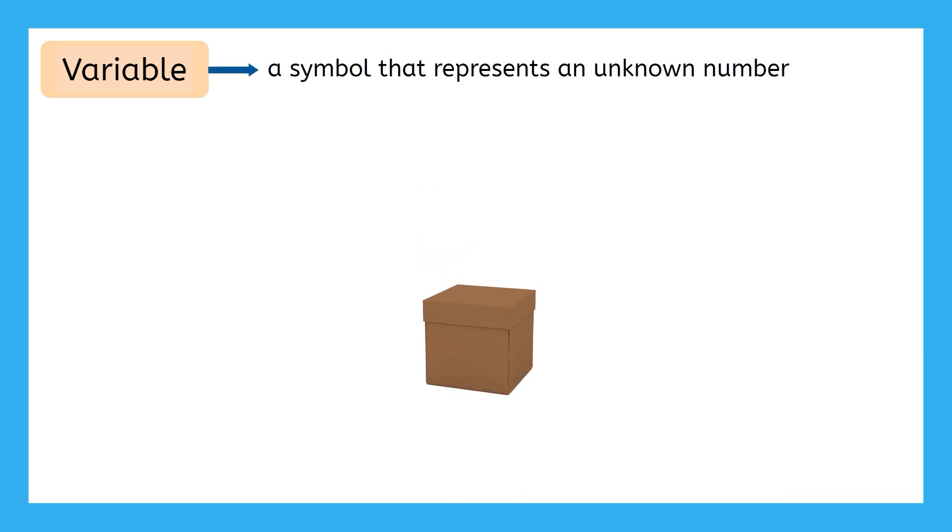We use letters a lot in algebra to represent unknown numbers. This type of letter in math is called a variable. To create a variable, we can use any letter we want because it's just a symbol that represents an unknown number. Think of it like a mystery box that could contain any number. We just don't know what it is yet. So let's pick a variable to start building our algebraic expression. I'll use J for Justin.